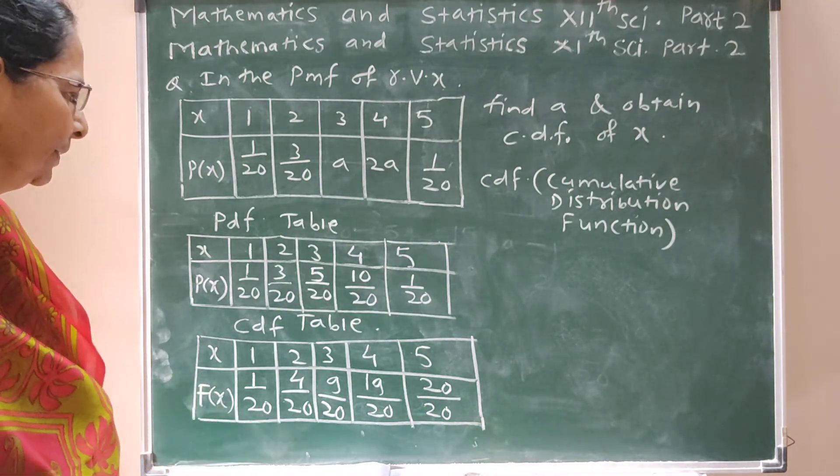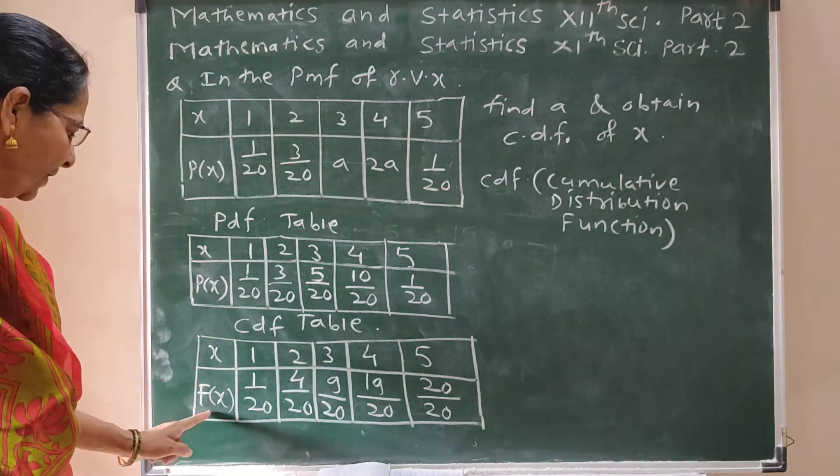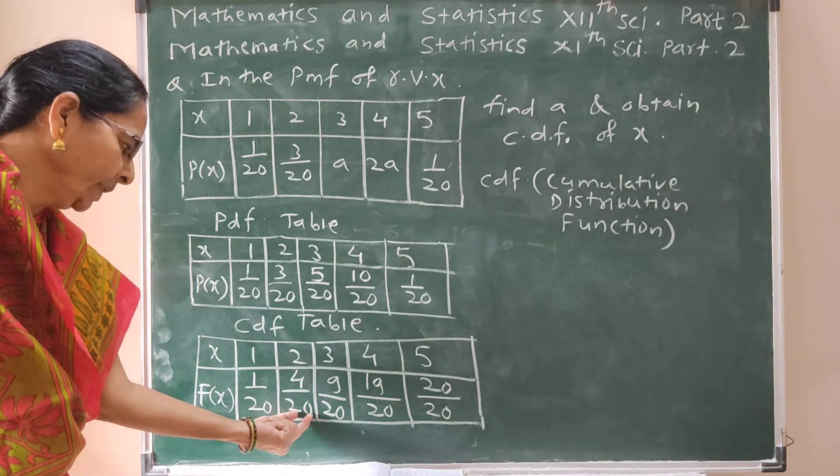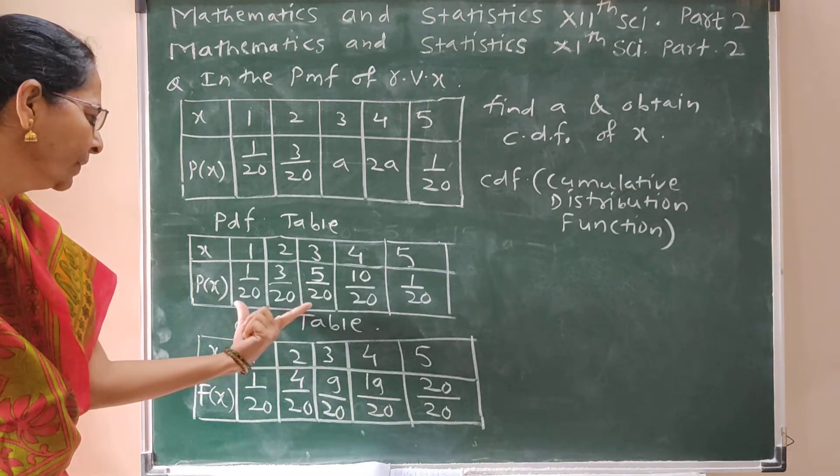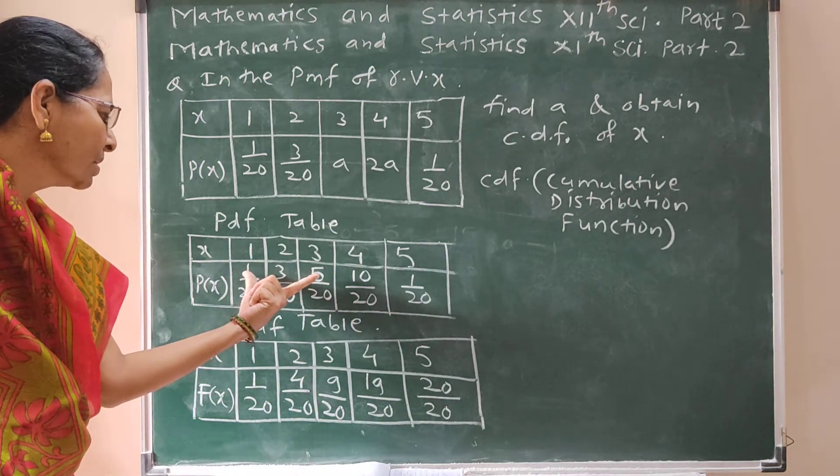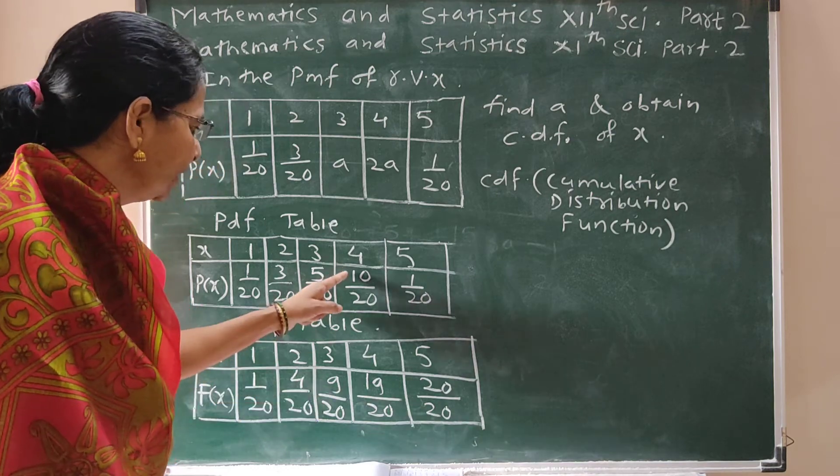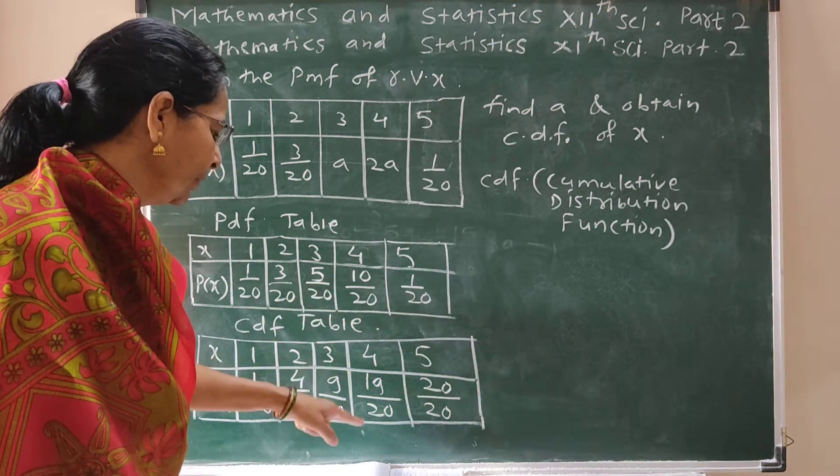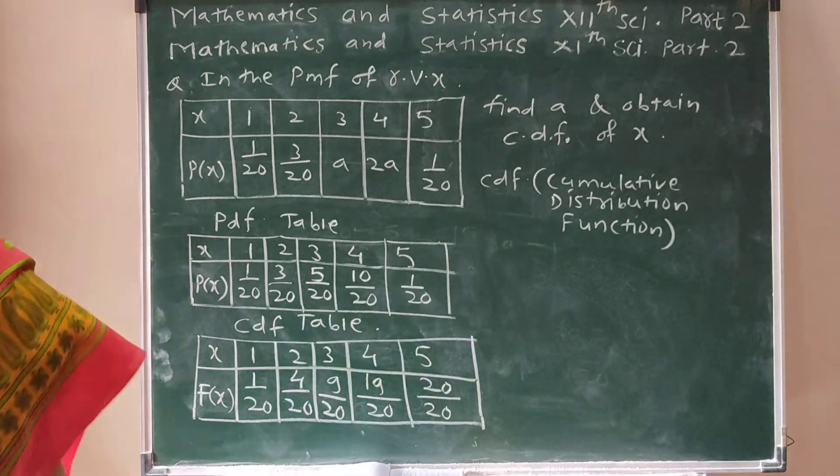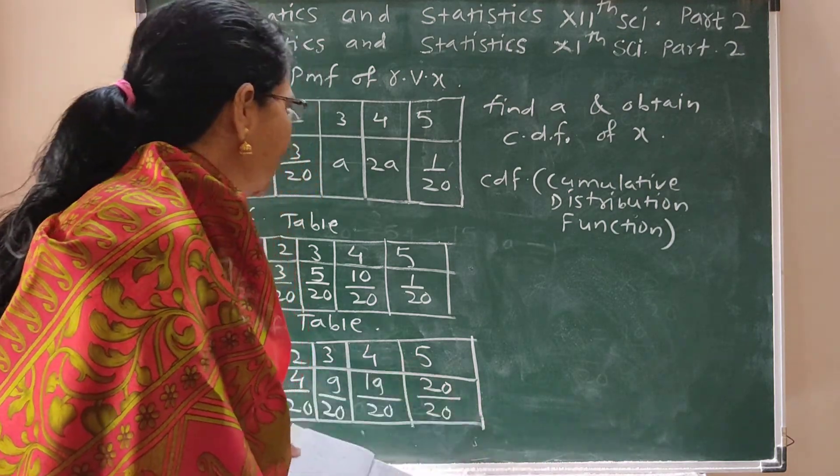Now this is the method. How to solve CDF table: First write FX, first value 1 upon 20. Then take sum with common denominator 20, sum in numerators gives 4, then 9, then 19 upon 20. And in this way do CDF table.